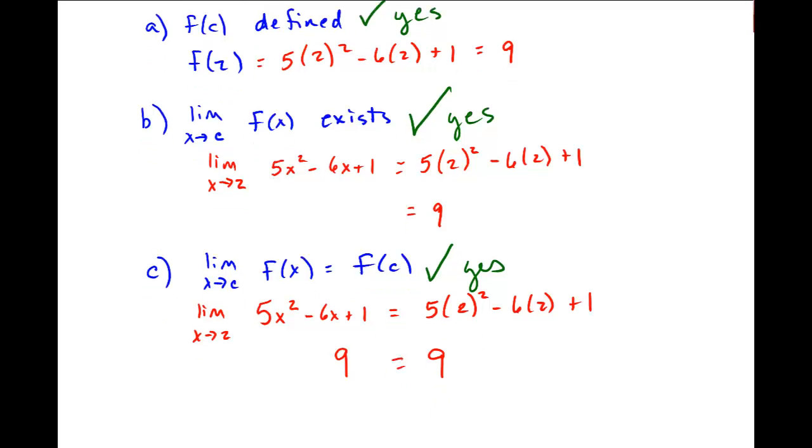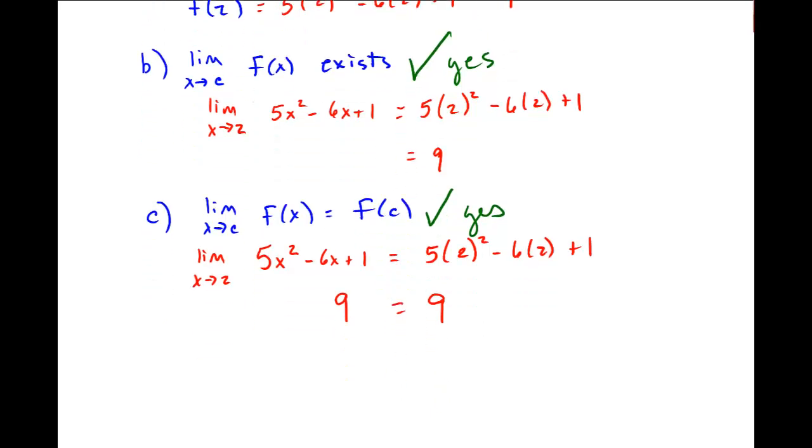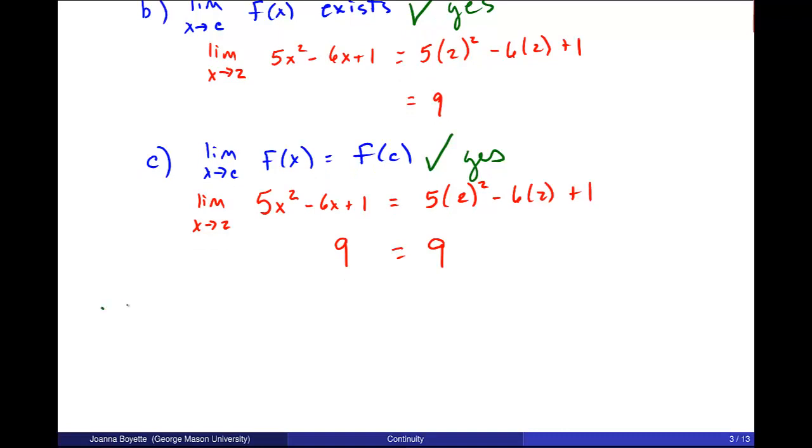And so as a result, because I can answer yes to all three of these, the function, I can write this conclusion statement. The function f(x), which is 5x squared minus 6x plus 1, is continuous at x is equal to 2.